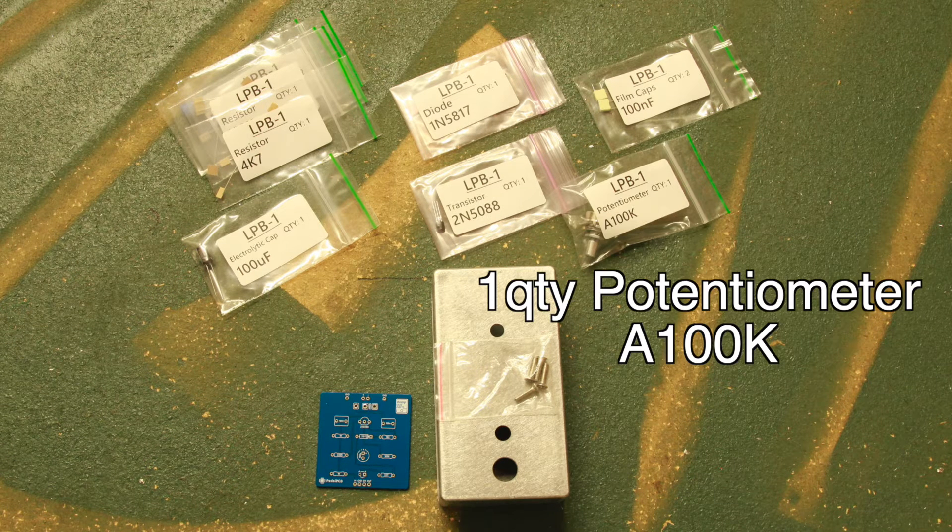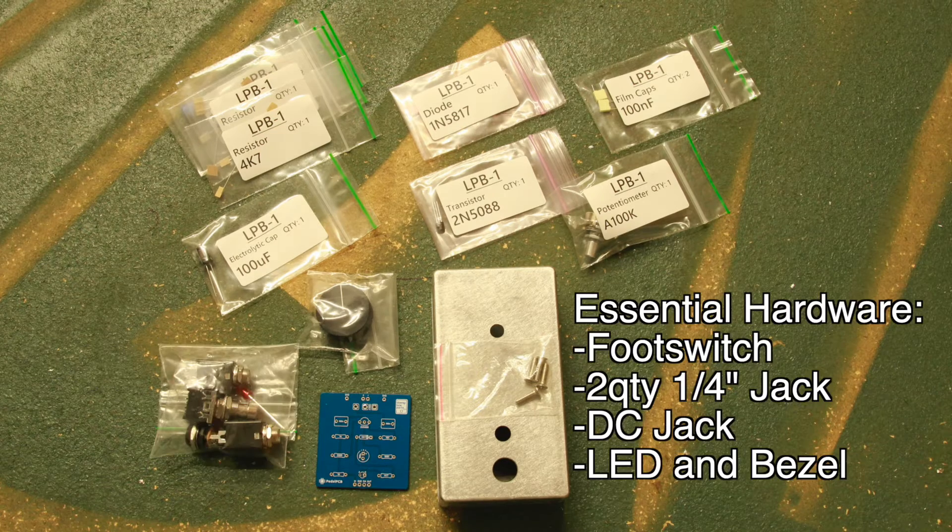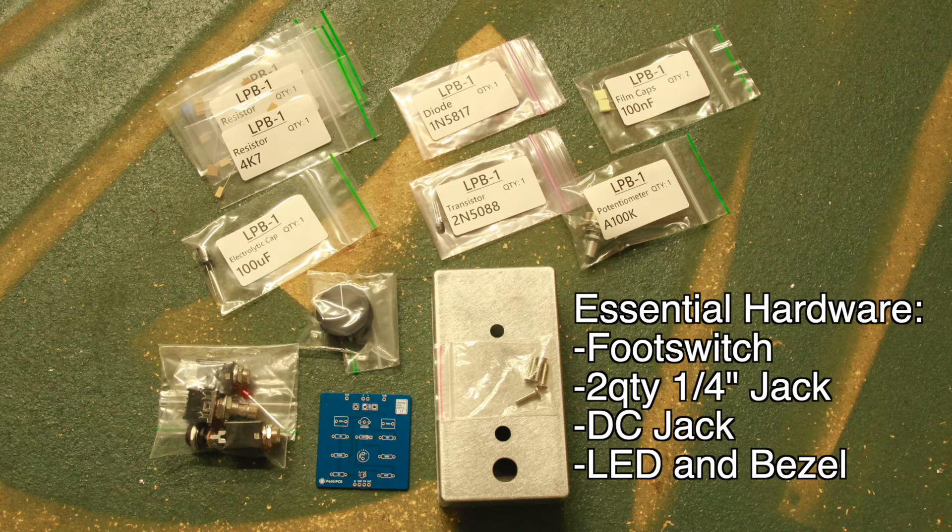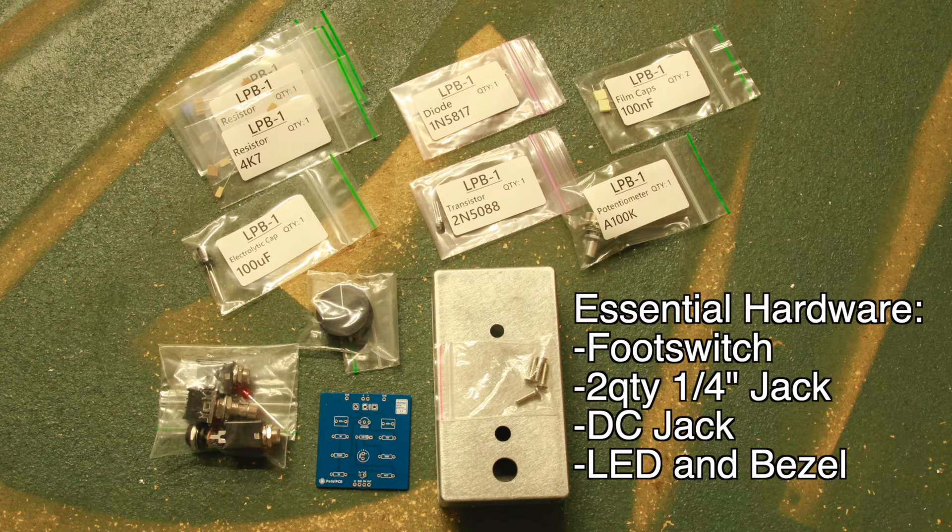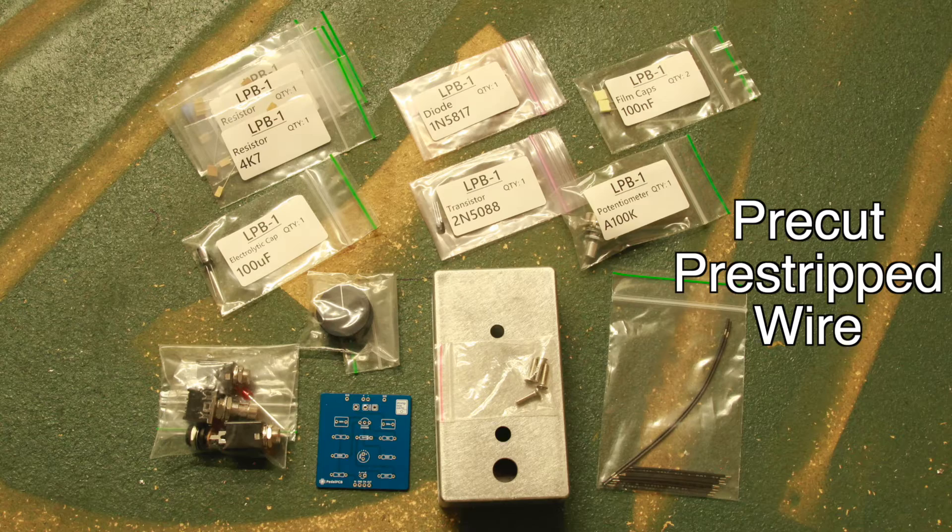One A100K potentiometer. One knob. An essentials hardware kit with a footswitch. Two quarter inch jacks. DC jack. LED and LED bezel. And lastly a baggie of pre-cut pre-stripped wire.